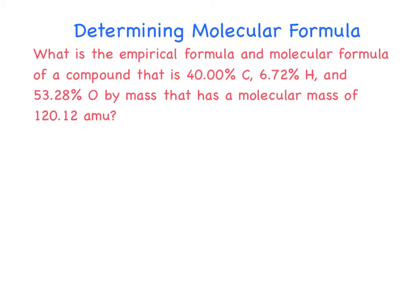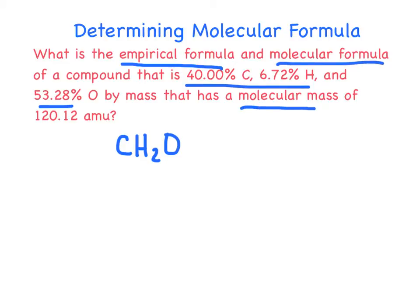Now don't freak out about this one. This is that same problem that we already did. So what we have to do is we determined already the empirical formula. And the empirical formula that we determined by these percentages right here was CH2O. Now this says what is the molecular formula it wants to know. And it gives you a molecular mass of 120.12 amu. So the first thing that we have to do is we have to go to our periodic table, and we have to find what is the formula mass or the molecular mass of CH2O. And when we look it up on the periodic table, carbon is 12.01. This is 1.01 times 2 plus 16.00. And we end up with 30.03 amu. Now I know you could say grams if we were doing molar mass, but this was molecular mass. So one of these is 30.03 amu.